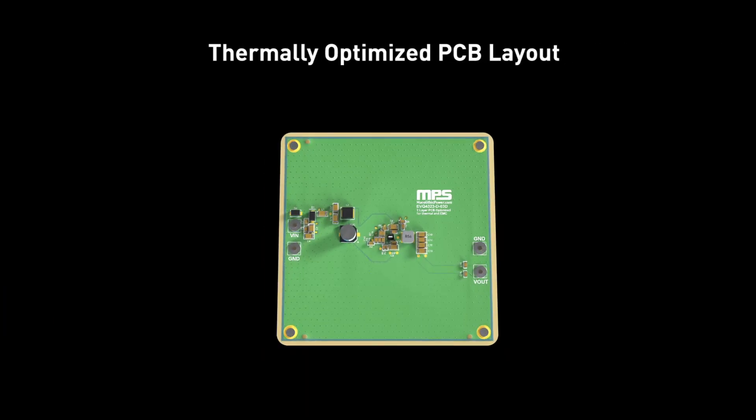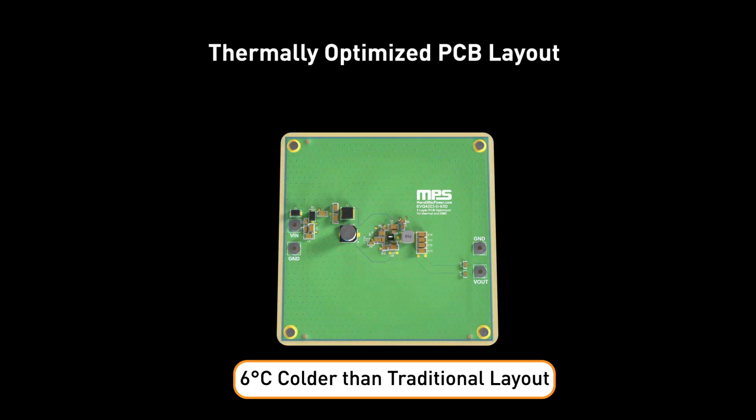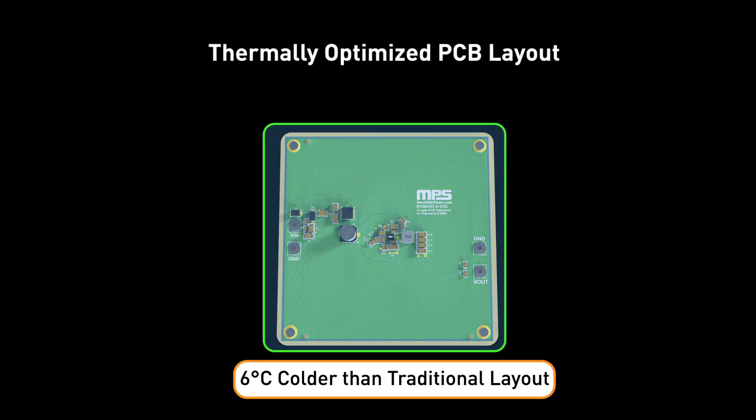Findings from these tests reveal that the recommended, thermally optimized PCB layout runs 6 degrees Celsius colder than a traditional layout without using extra parts or a larger board space.